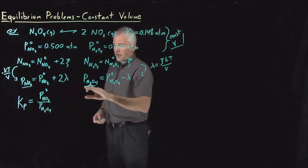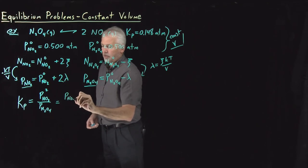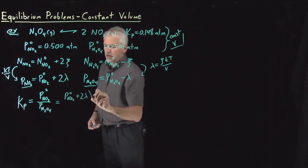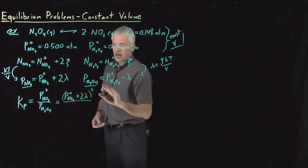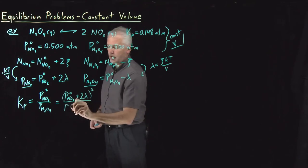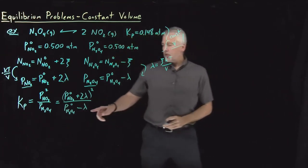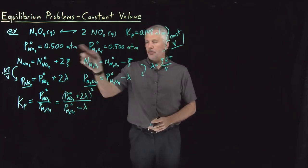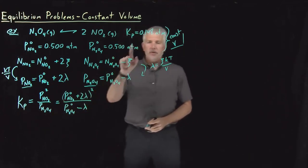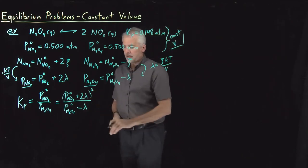I know I have an expression for P of NO2, so I can write that as initial pressure of NO2 plus twice lambda. That gets squared in the numerator. In the denominator, pressure of N2O4 is its initial pressure minus lambda. And so everything in this expression except for lambda, I know a value for. I know my initial pressures of NO2 and N2O4. We were given those. I know the Kp for this reaction. So all I have to do is rearrange this equation now to solve for lambda.